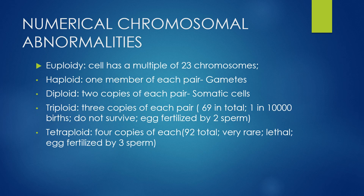Now we look at numerical chromosomal abnormalities. Euploidy refers to a cell that has a multiple of 23 chromosomes. Haploid means one member of each pair, as in gametes, giving 23 chromosomes total. Diploid means two copies of each pair, as in somatic cells, giving 46 chromosomes total. Triploid and tetraploid are abnormal. In triploidy there are three copies of each pair, giving 69 chromosomes — occurring in about 1 in 10,000 births. These children do not survive, and it usually happens when an egg is fertilized by two sperm. In tetraploidy there are four copies of each chromosome, giving 92 total, which is very rare, lethal, and usually occurs when an egg is fertilized by three sperm.